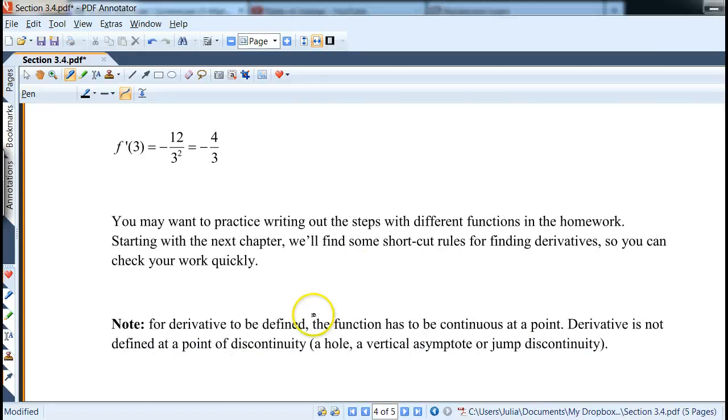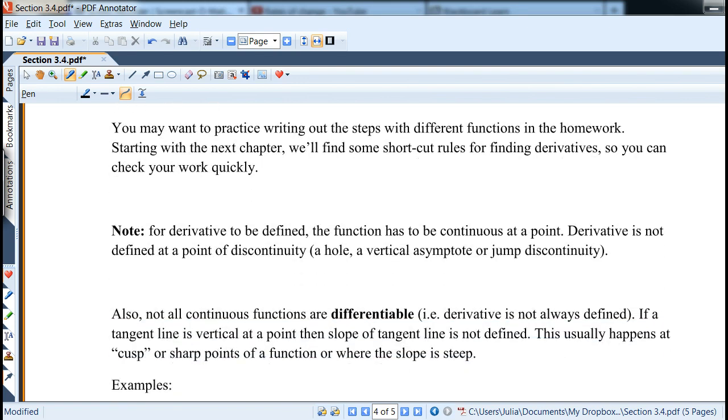Now we're going to, for the rest of the section, we'll talk about where the derivative is not defined. Well, first of all, the function has to be continuous. That's like the first condition that has to be satisfied. Derivative is not defined typically at a point of discontinuity, any point, whether it's a hole, a vertical asymptote at a point, or jump discontinuity. Now if the function is continuous, we have the verb called differentiable. Not all continuous functions are differentiable. There are some examples that are not.